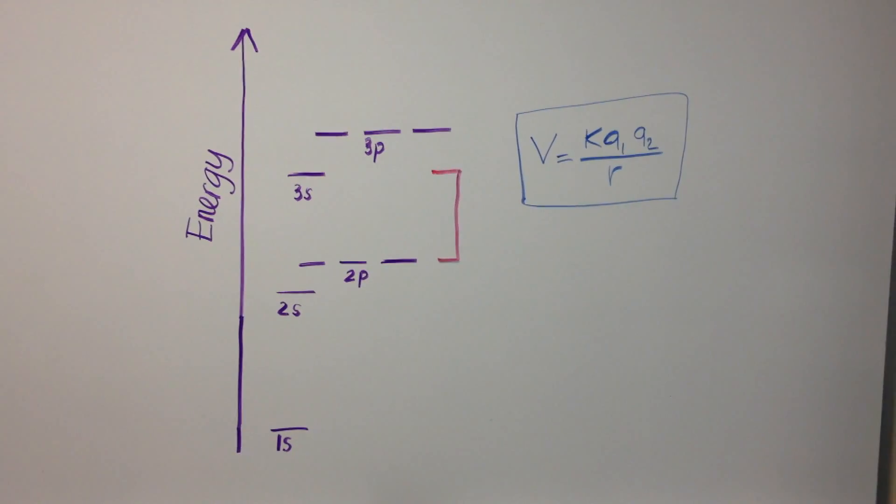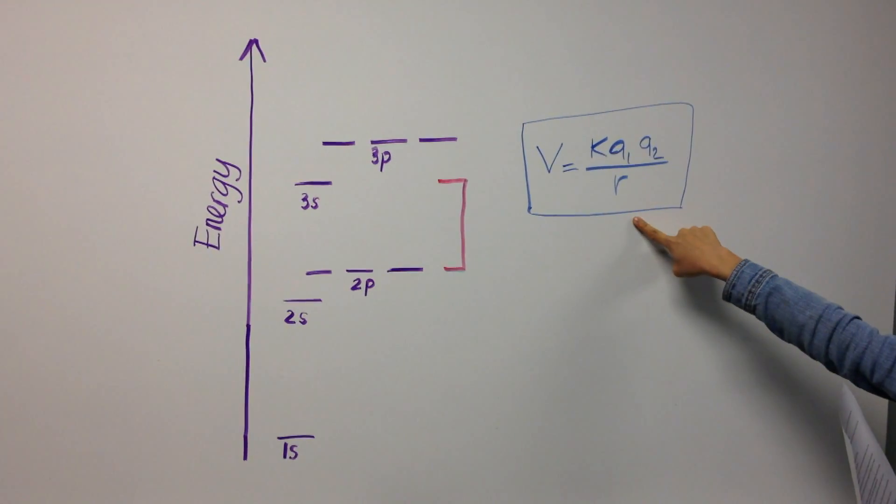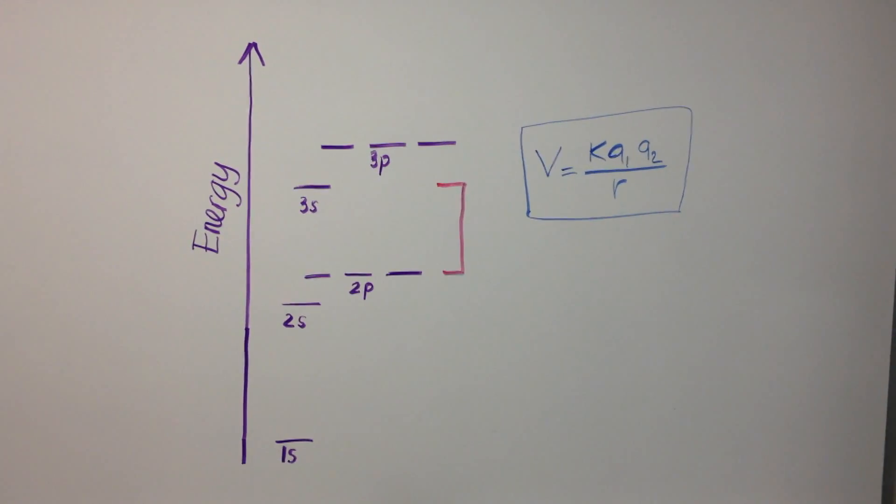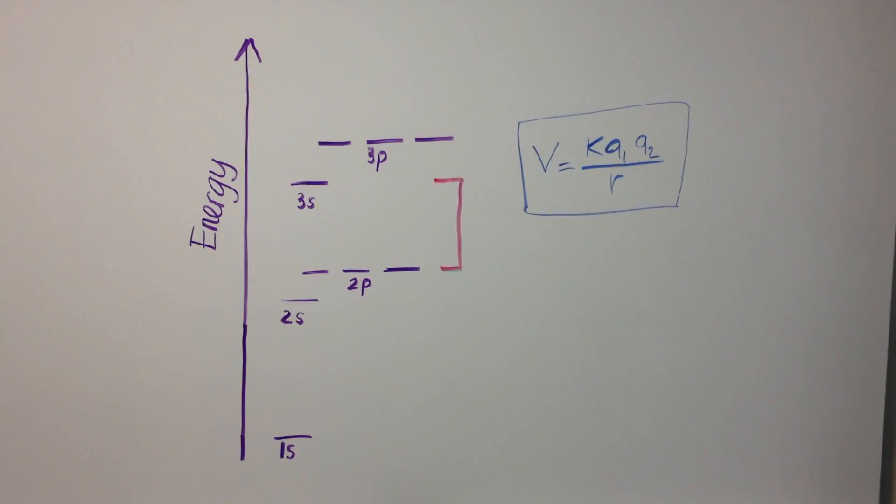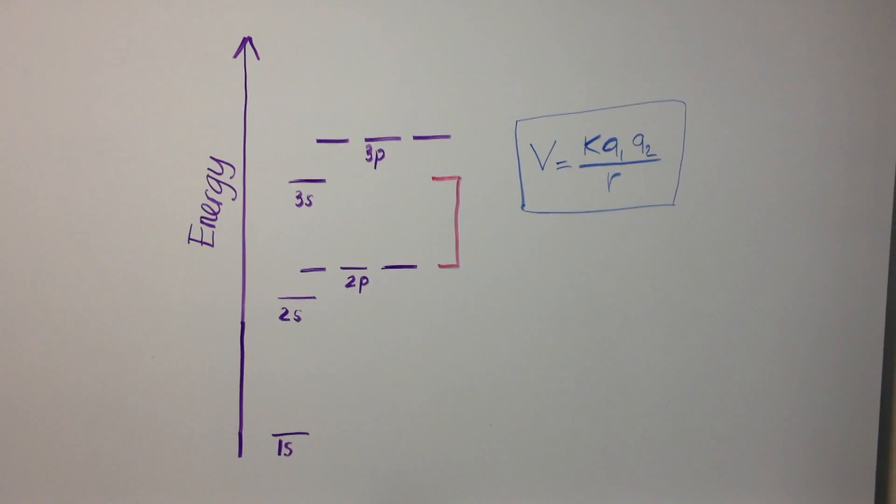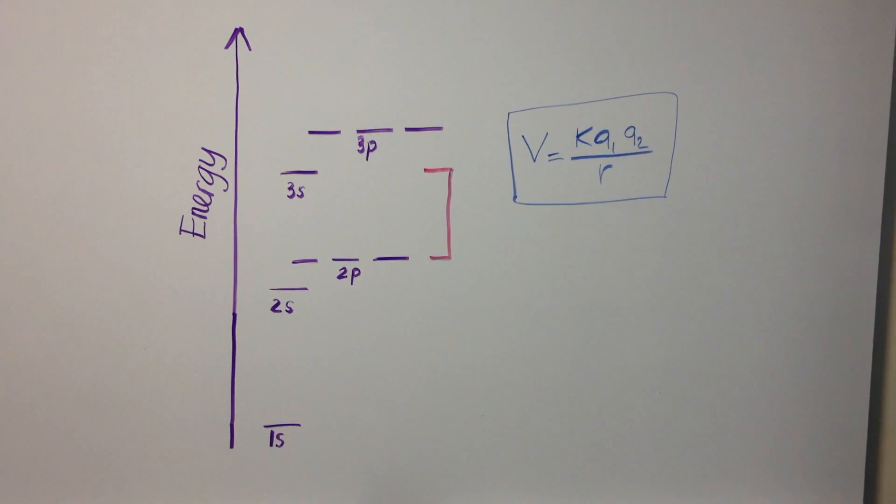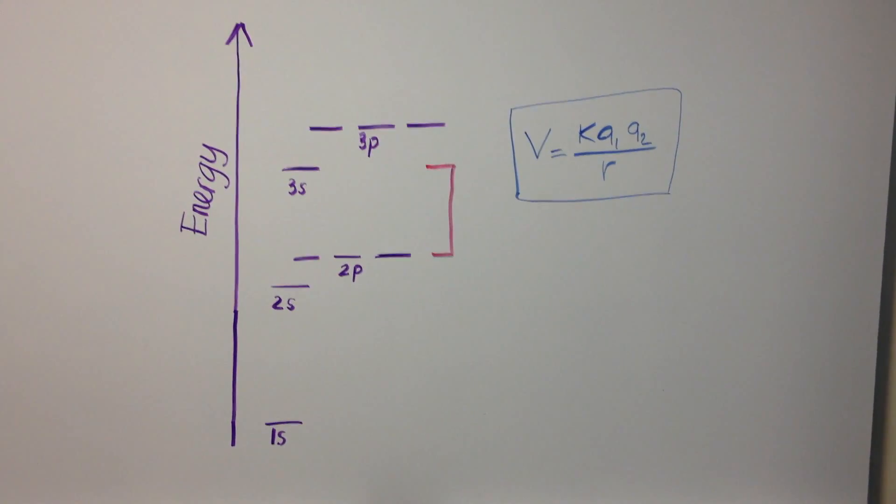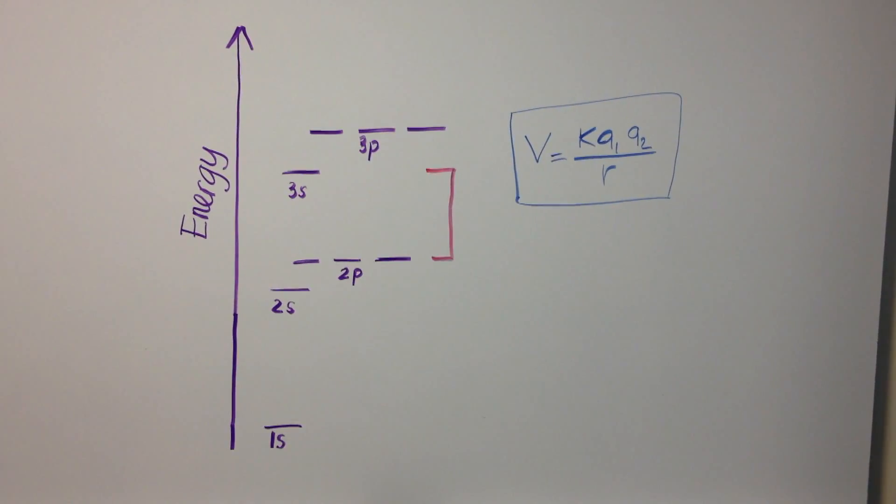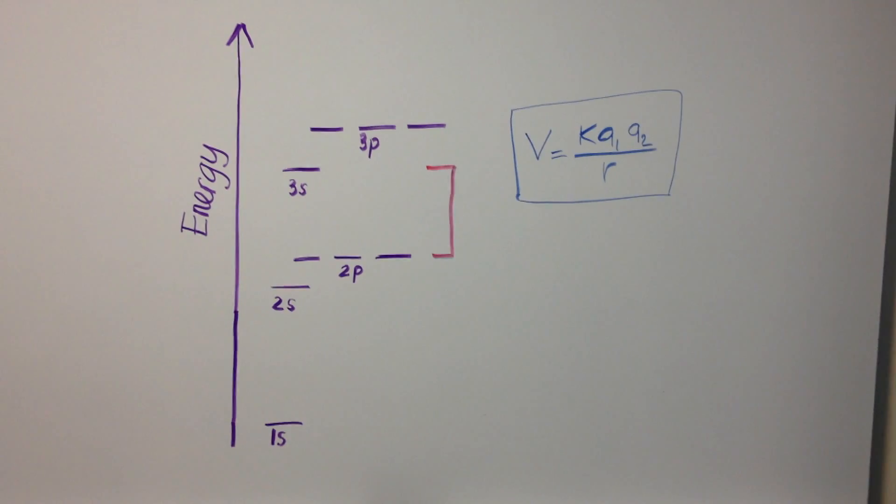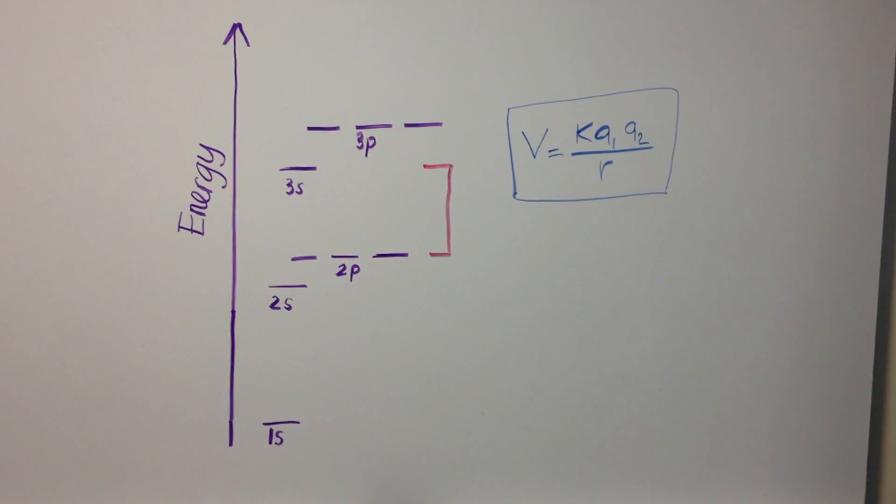The potential energy equation can be used to show the attraction of an electron with a nucleus. Since the electron has a negative charge and the nucleus has a positive charge, there is an attraction. This attraction between electrons and the nucleus persists as long as the effective nuclear charge is positive.